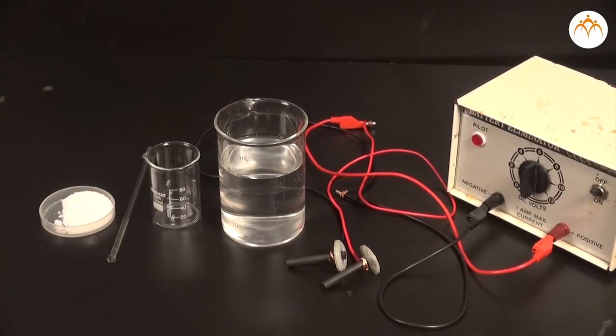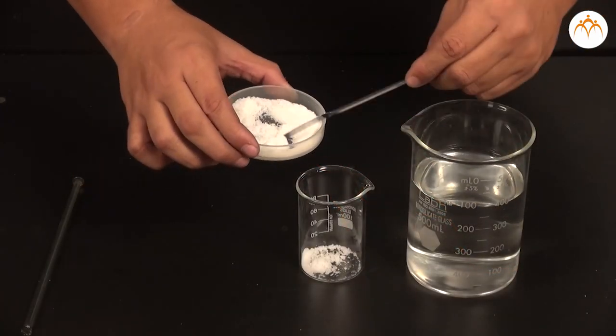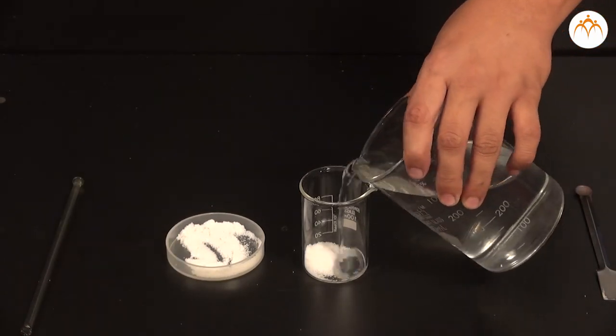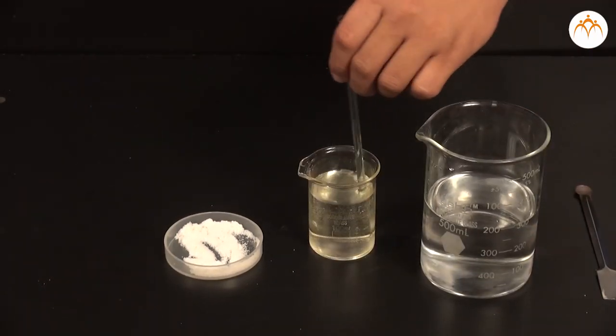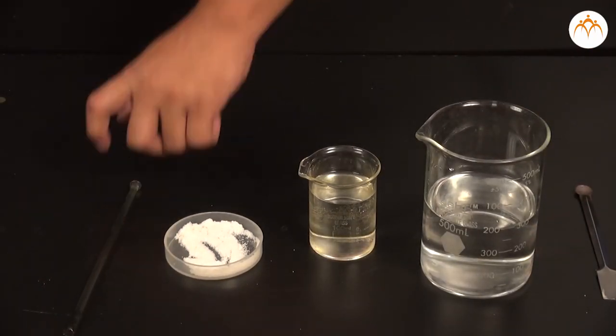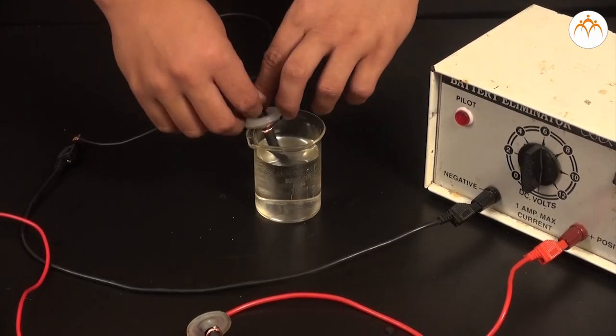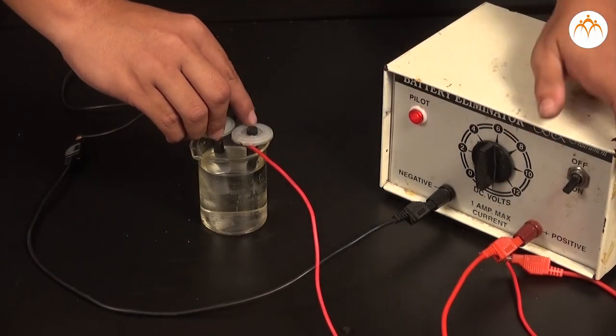The conduction of electricity through the solution involves the movement of charged particles. A solution of ionic compound in water contains ions which move to the opposite electrodes when electricity is passed through it.